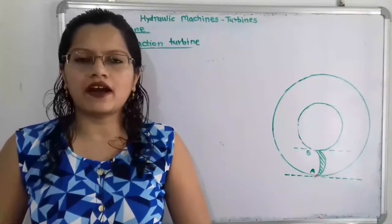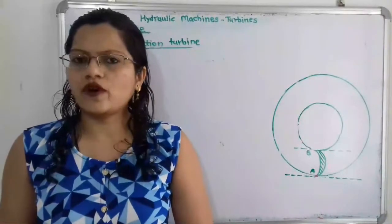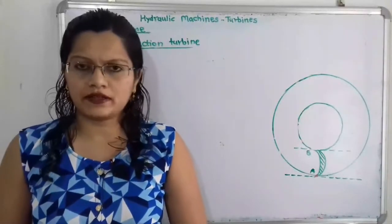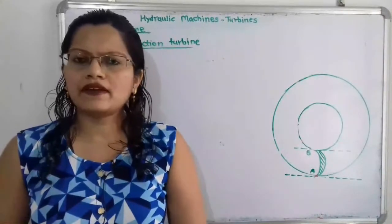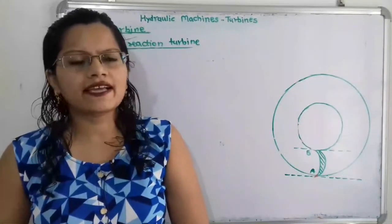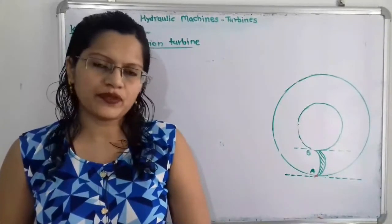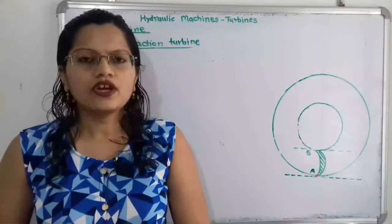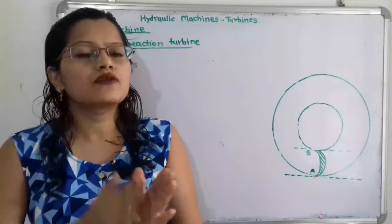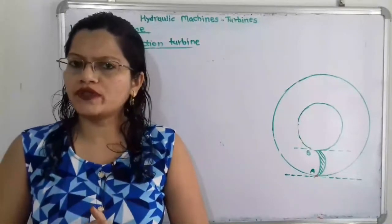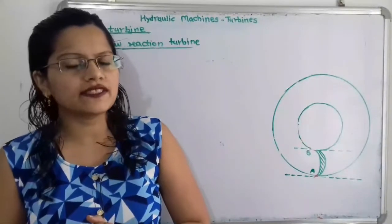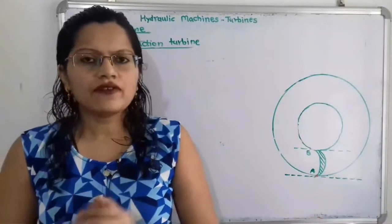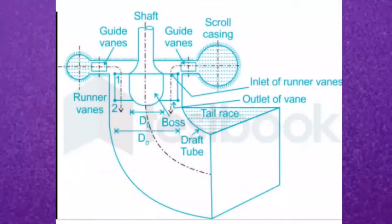Hello friends, this is Priyanka. Today we are going to solve a problem on the Kaplan turbine. The Kaplan turbine is known as the axial flow reaction turbine. Axial flow means water flows parallel to the axis of rotation of the shaft. Now let us observe the diagram of the Kaplan turbine and its main parts.